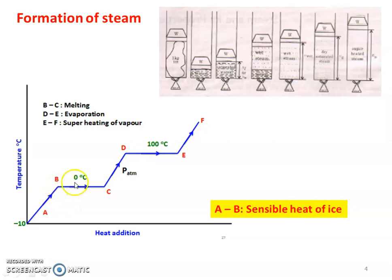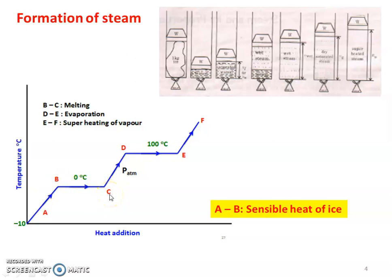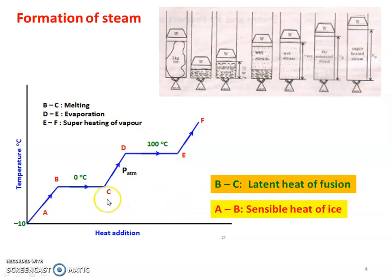At point B, the ice is at 0 degrees Celsius. As heat continues to be added, the quantity of water increases while the temperature remains constant. Point C is completely water. So B to C is the latent heat of fusion — the phase change from solid to liquid. The amount of heat spent during this phase change process is called latent heat.